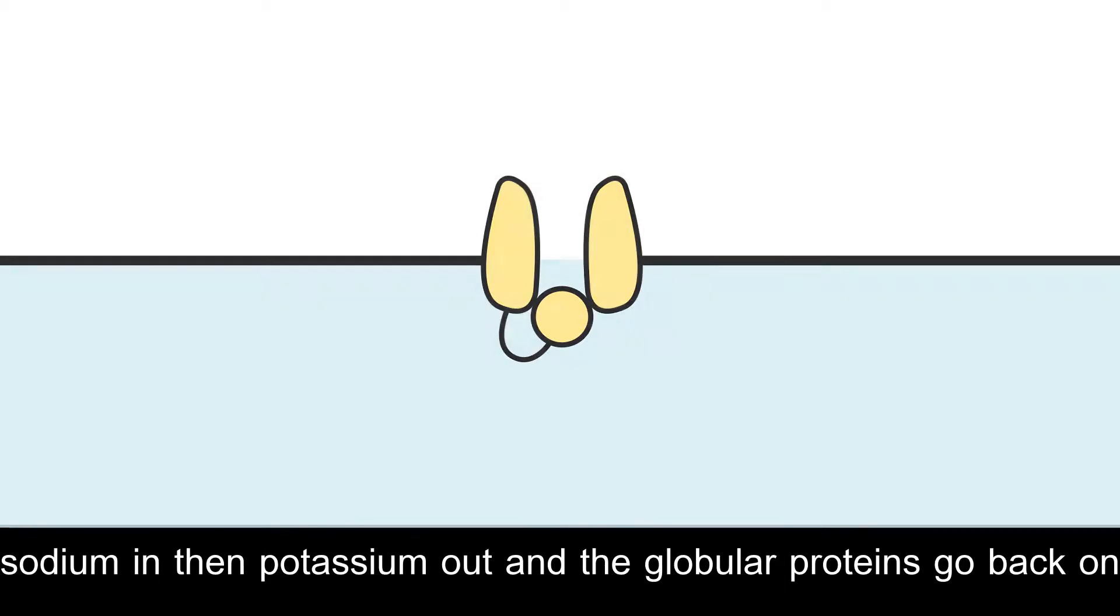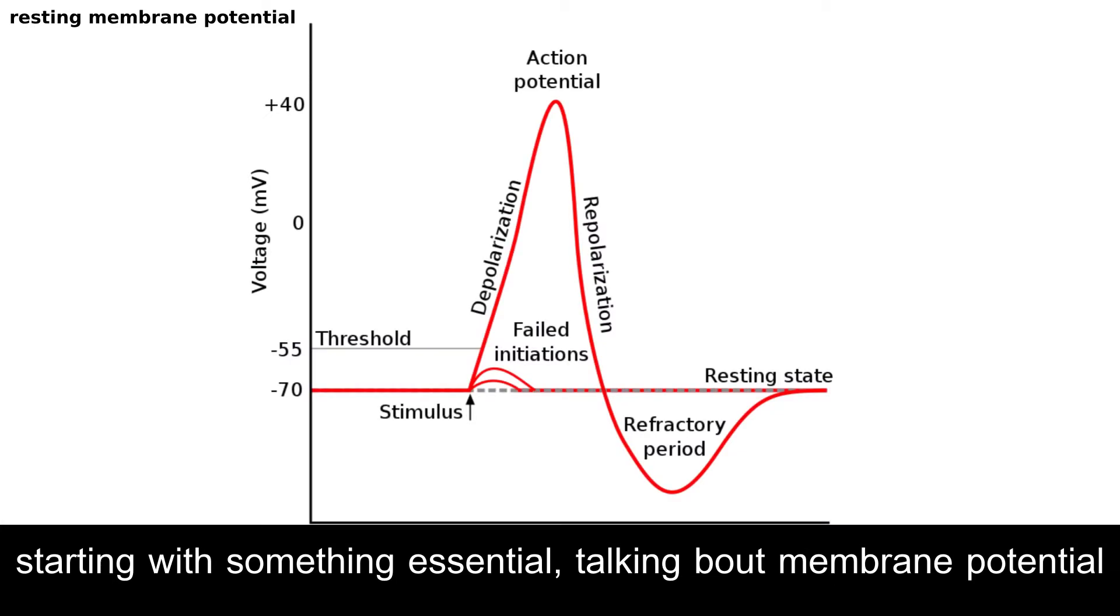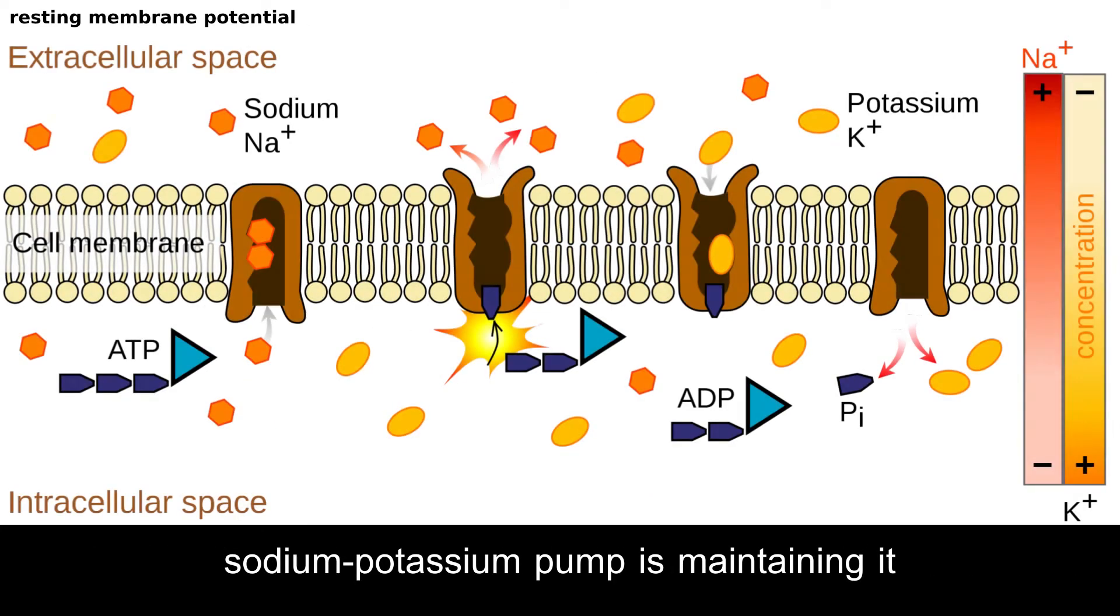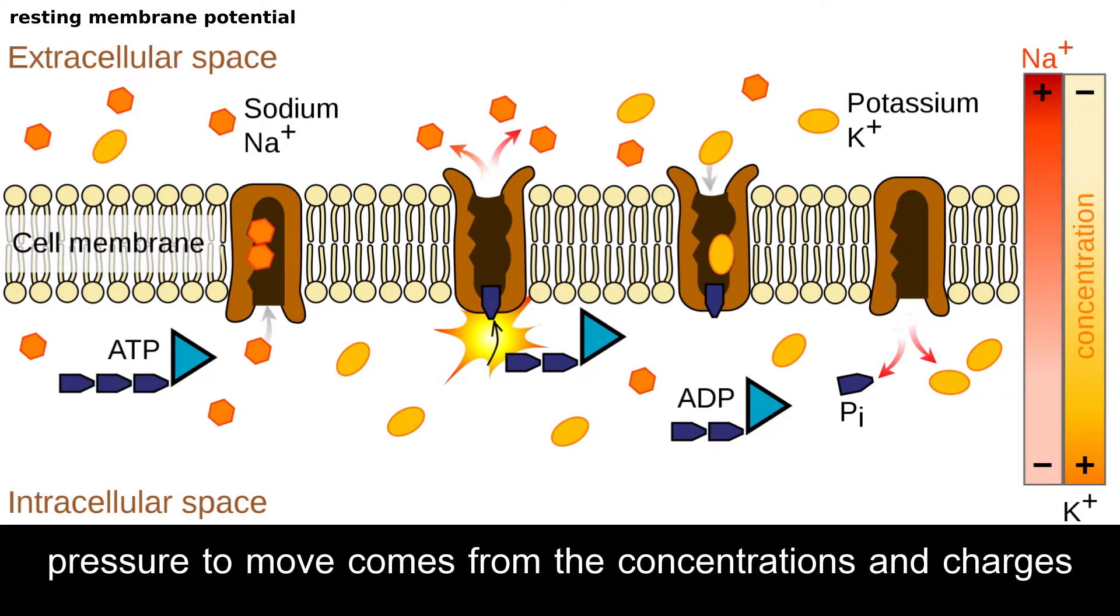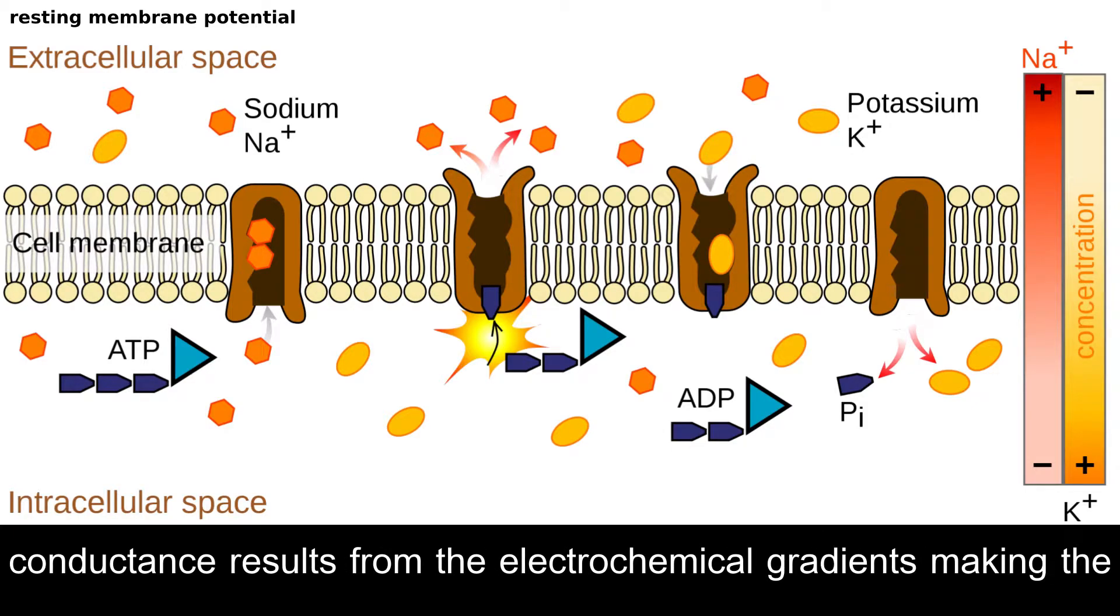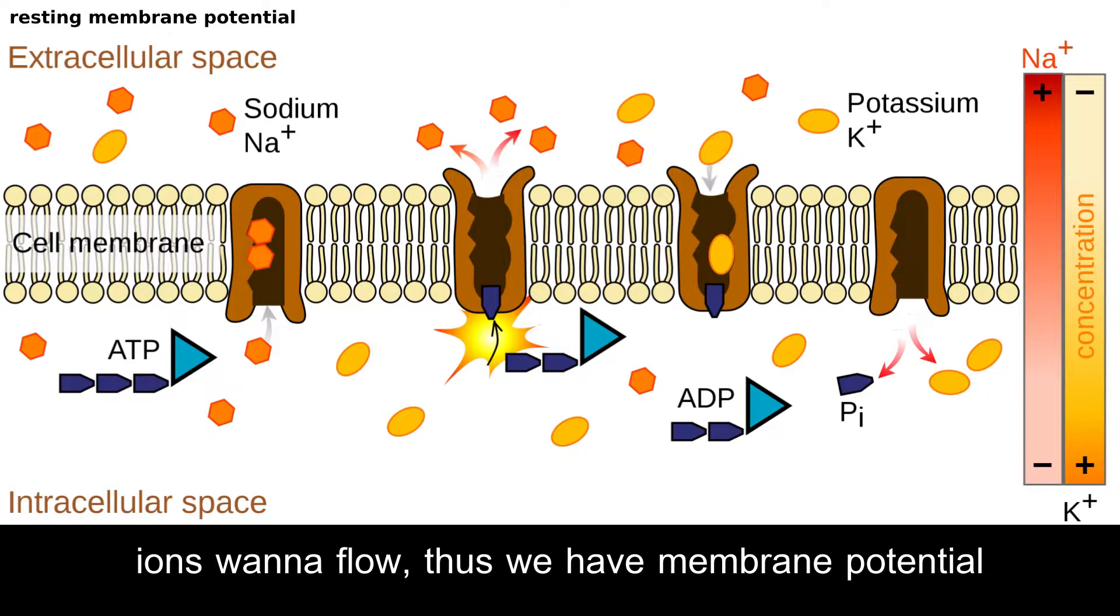Started with something essential, talking about membrane potential. 70 millivolt difference between the inside and the outside is special. Sodium and potassium pumps maintaining, and pressure to move comes from the concentrations and charges across the membrane. So we say that conductance results from the electrochemical gradients, making the ions wanna flow. Thus we have membrane potential.